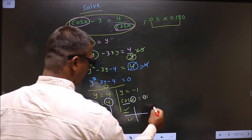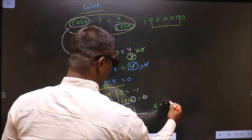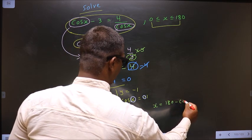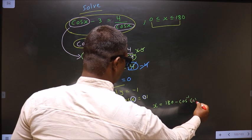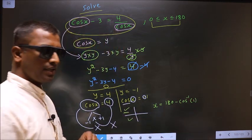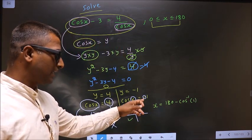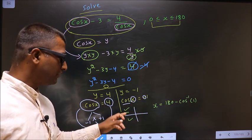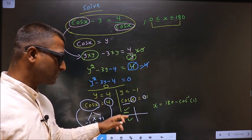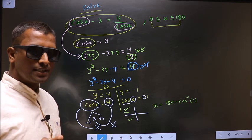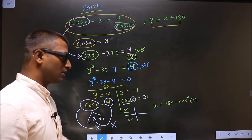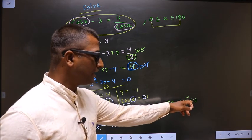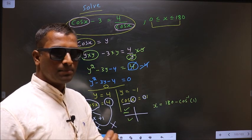To get an angle in the second, we should do 180 minus cos inverse 1. Remember this: negative sign should be used only for selecting the quadrants. Once quadrants have been selected, you should not place negative sign again here. Remember that.